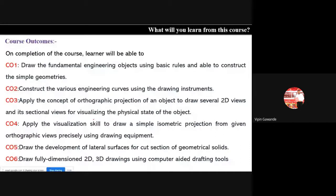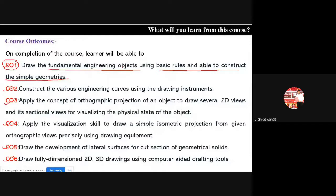These are the course outcomes from engineering graphics. For six units, at the end of the course you must learn all these things from each unit. From unit number one, we are going to learn about fundamental engineering objects using basic rules, and be able to construct simple geometry. When we complete unit number one, you must be able to say you've learned the fundamentals.